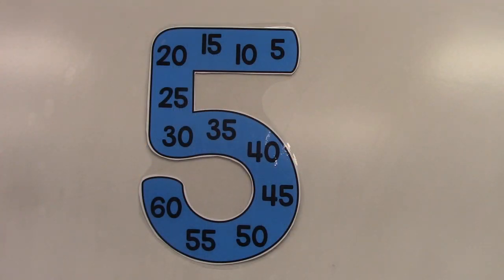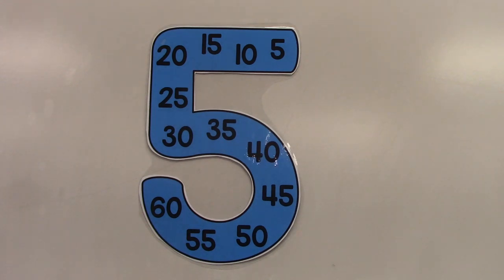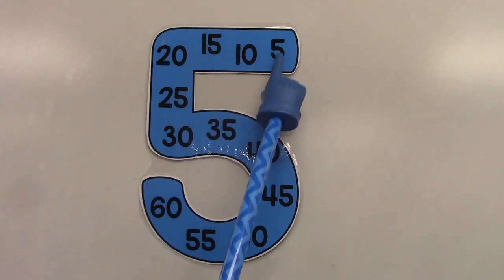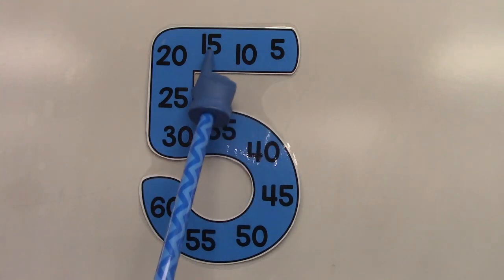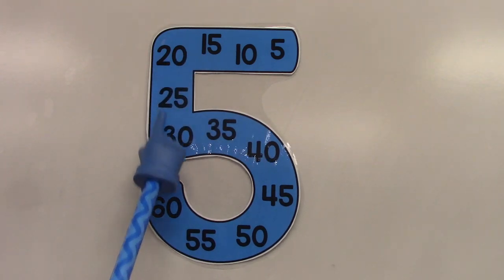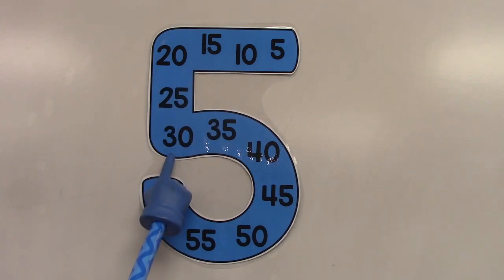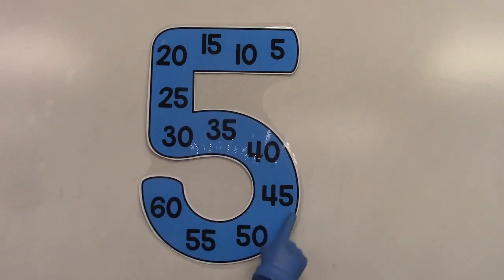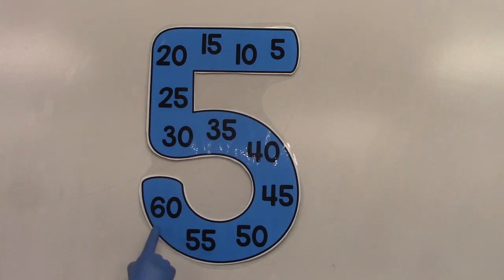Let's skip count by the number 5. Learning to skip count by 5 is very important because we need it when we're telling time and when we're counting money. Let's begin: 5, 10, 15, 20, 25, 30, 35, 40, 45, 50, 55, 60.